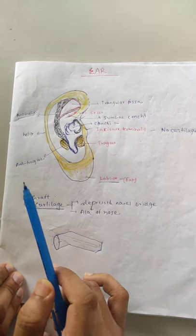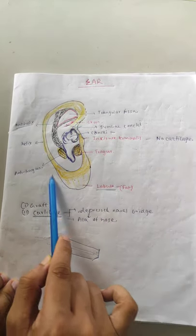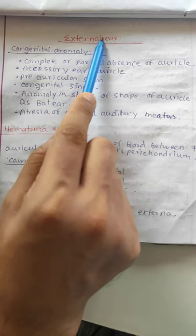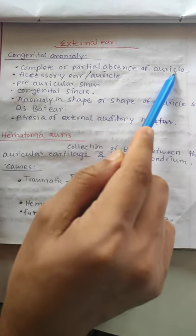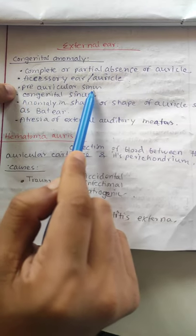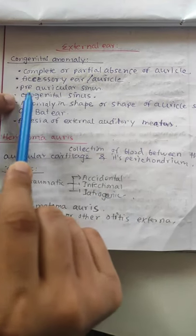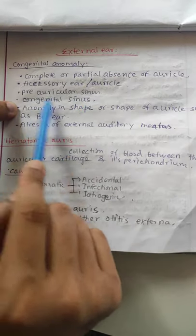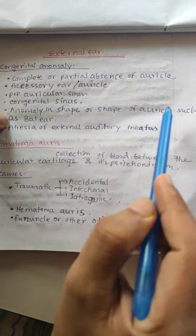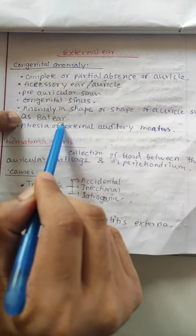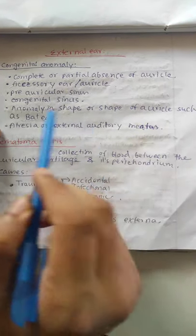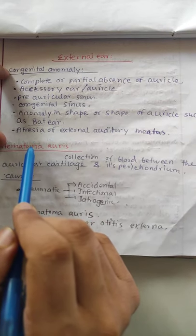The congenital anomalies of the external ear include: number one, complete and partial absence of the auricle; number two, accessory ears; number three, pre-auricular sinus or congenital sinus; number four, abnormality in the shape of the auricle such as bat ear; and number five, atresia of the external auditory meatus.